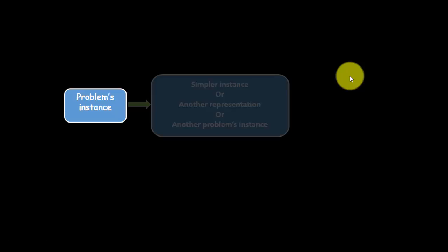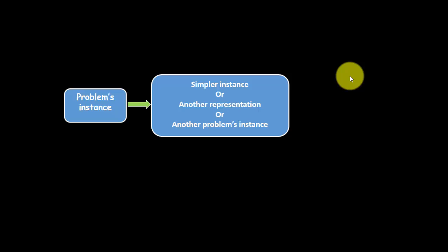So this is our input for algorithm, the problem instances. We put that into algorithm by using a Transform and Conquer, so we can either simplify the instances, or change it into another representation, or change it into another problem instances. And then we solve it.